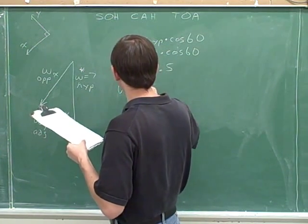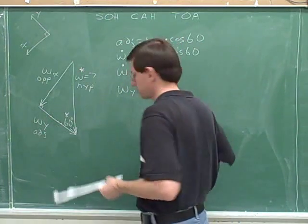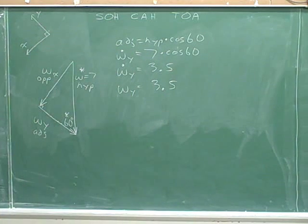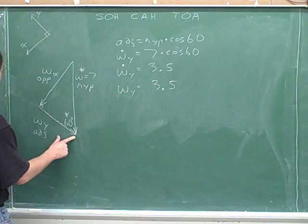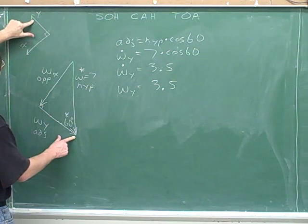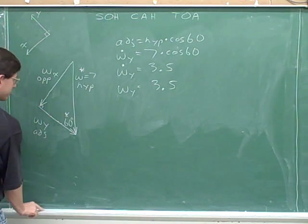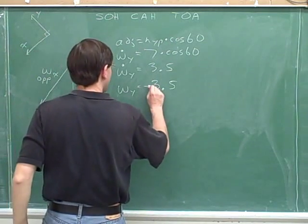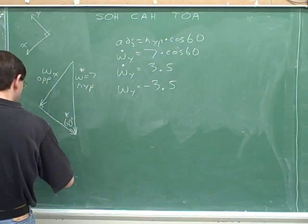Now we can figure out W sub y without the dot — the signed component — using those arrows we painstakingly worked out. It looks like W sub y is pointing down and right, but the positive y direction is up and left. The component is pointing in the negative direction, so W sub y equals negative 3.5.